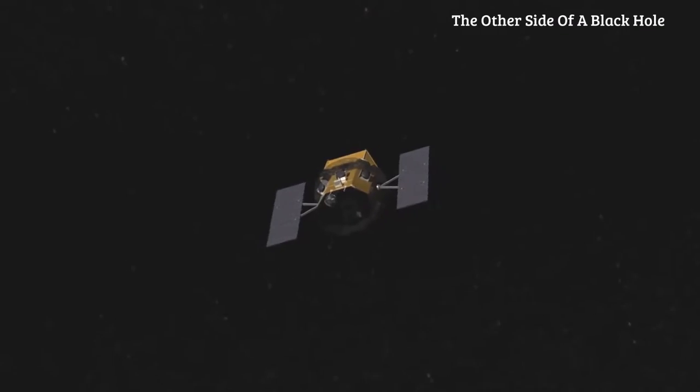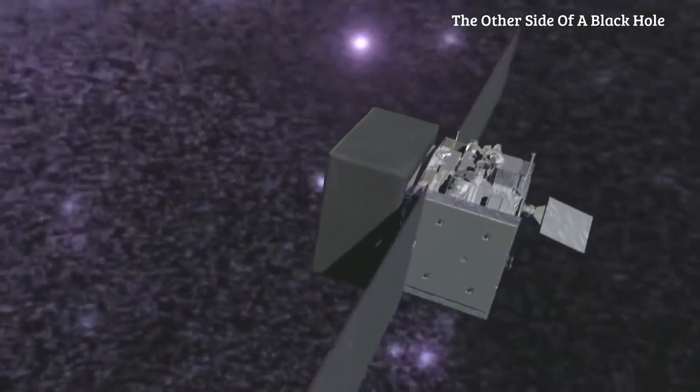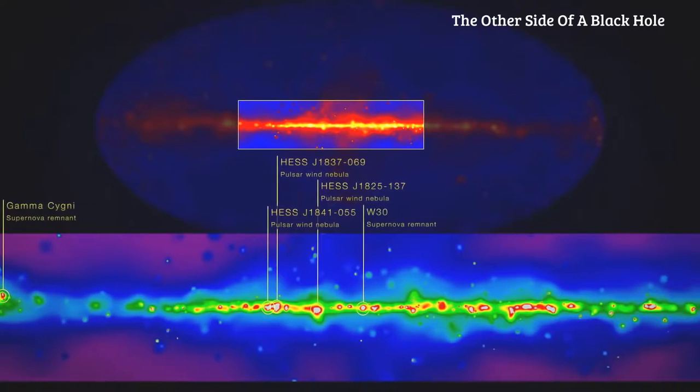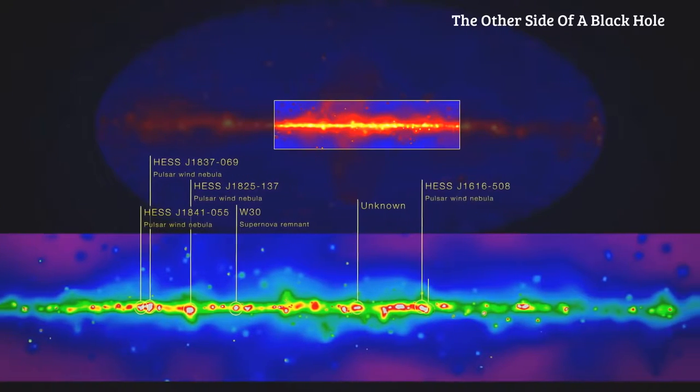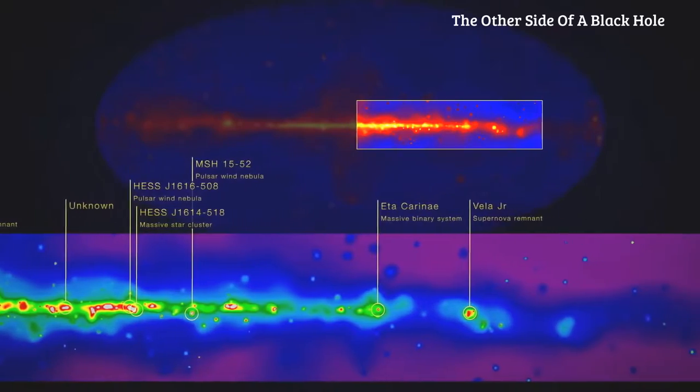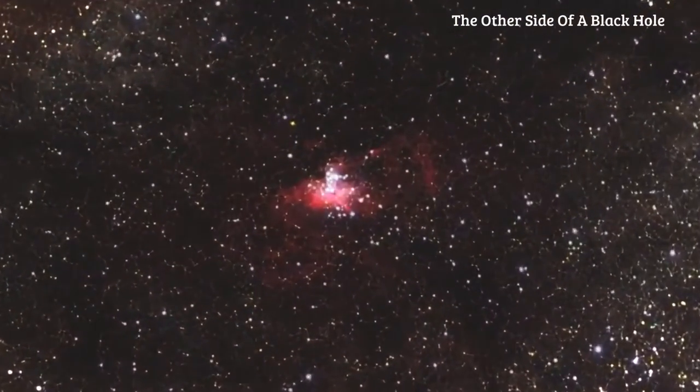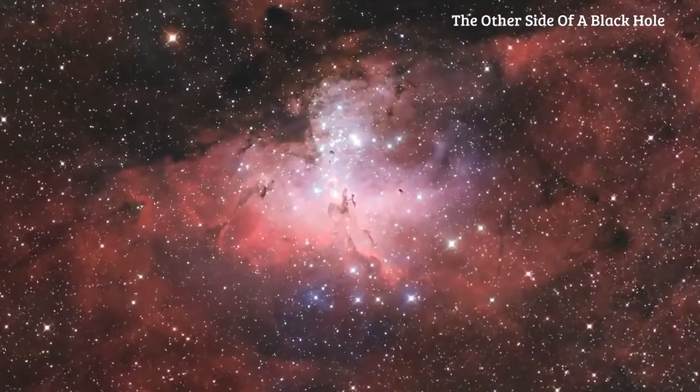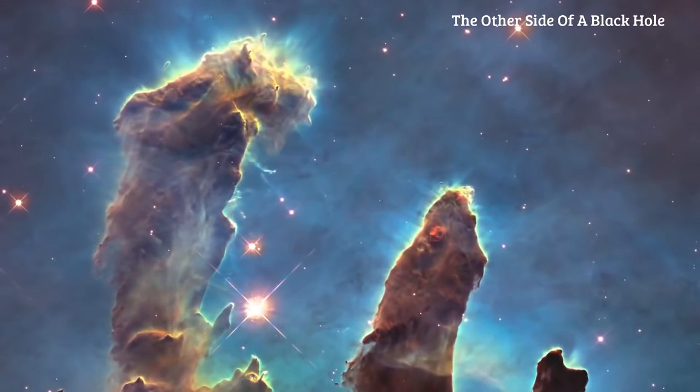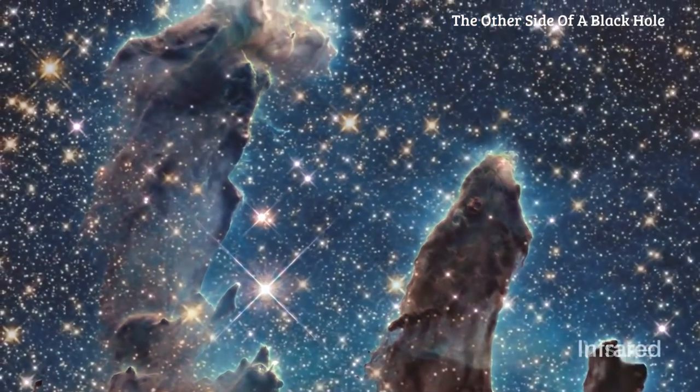Because high-energy light does not penetrate our atmosphere, scientists launched a fleet of space observatories designed to capture wavelength bands from gamma ray to infrared. These wavelengths tell us the temperature of matter in an object. Gamma rays and X-rays: tens to hundreds of millions of degrees. Ultraviolet: hundreds of thousands. Visible light: tens of thousands. Infrared: hundreds of degrees.